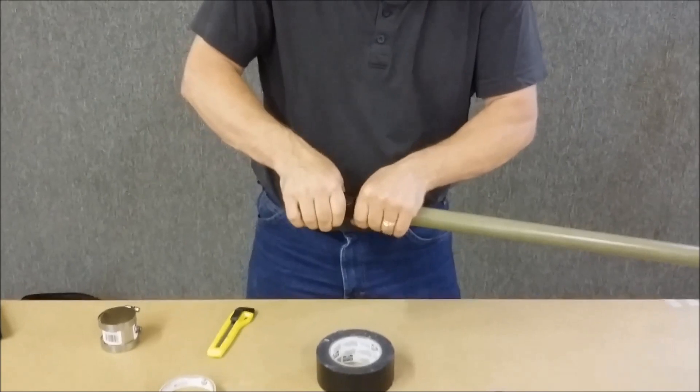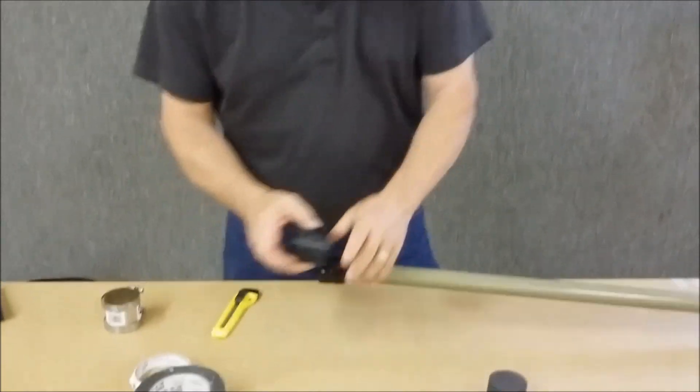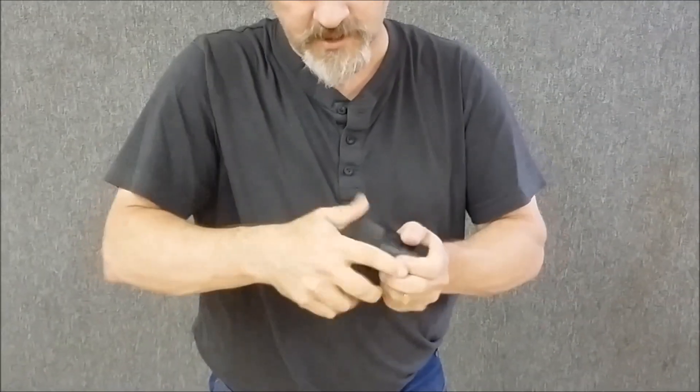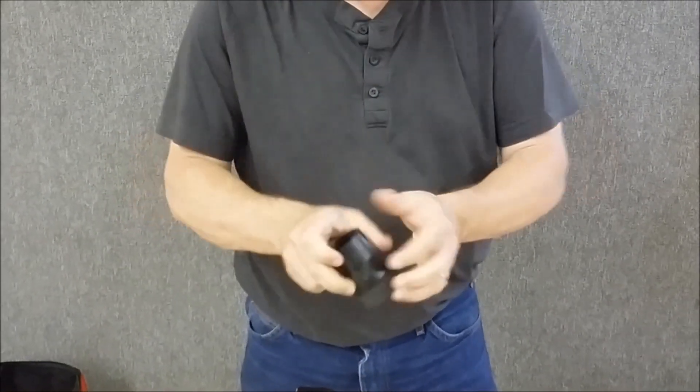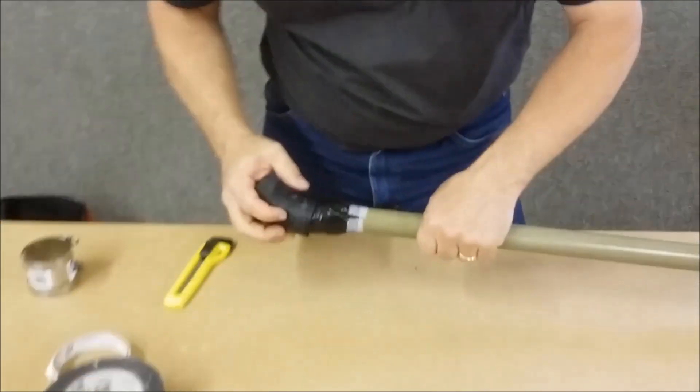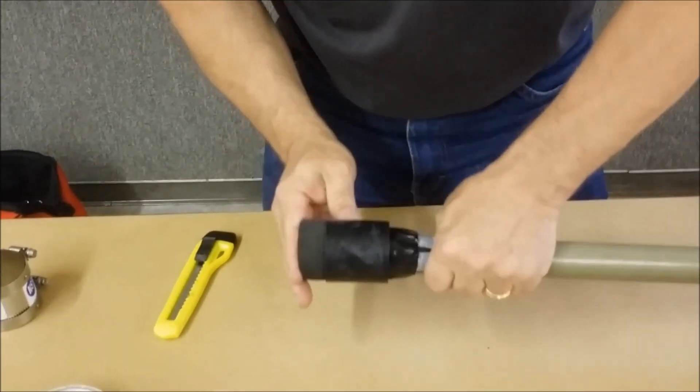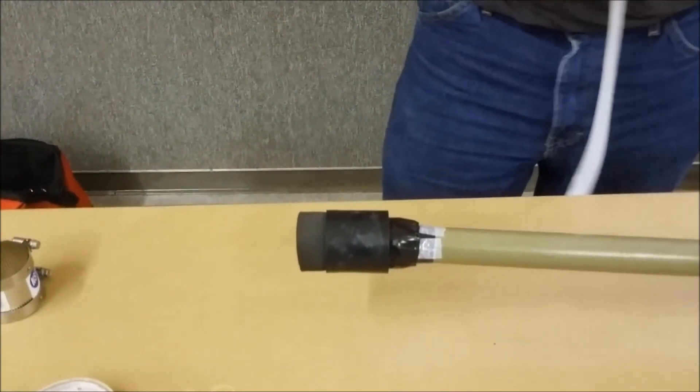Now that you have that set up, take your foam, push it inside of one end of your coupling so it's seated down into the edge. And then just push it on here, and now you can start putting strapping tape on your spear tip.